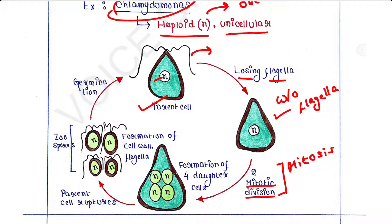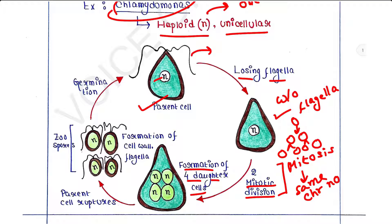After one mitotic division, one cell becomes two. After a second mitosis, four cells are formed. So after two rounds of mitotic divisions, four daughter cells are produced. Each of them is haploid because mitosis yields cells with the same chromosome number as the parent.